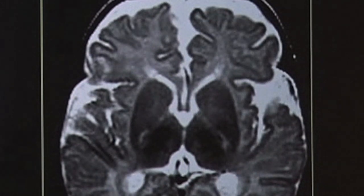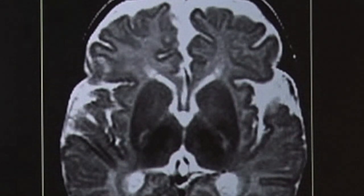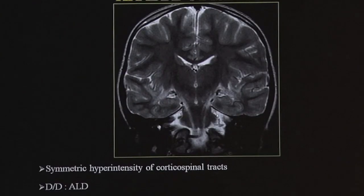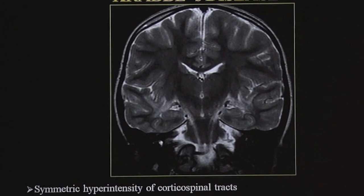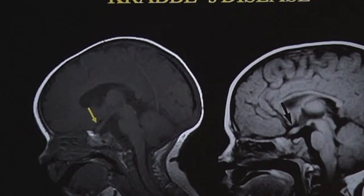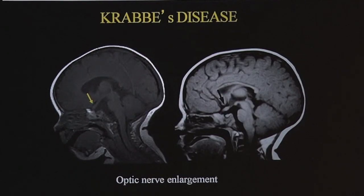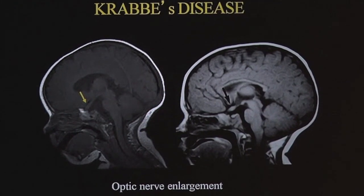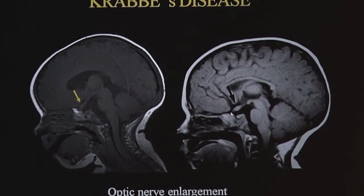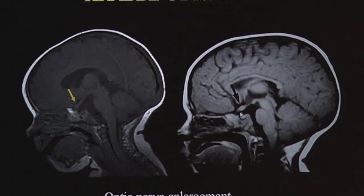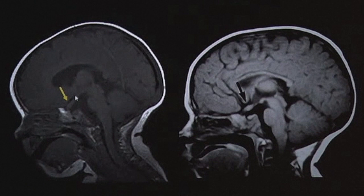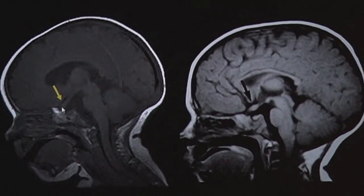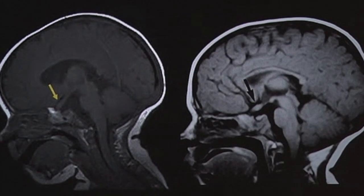Also typical of Krabbe's is cerebral atrophy setting in early, and symmetric hyperintensities of the corticospinal tracts due to Wallerian degeneration of pyramidal tracts — these are also present in adrenoleukodystrophy. Another feature is apparent thickening of cranial nerves due to deposition of abnormal metabolites, including thickening visible at the optic chiasma and optic tracts.